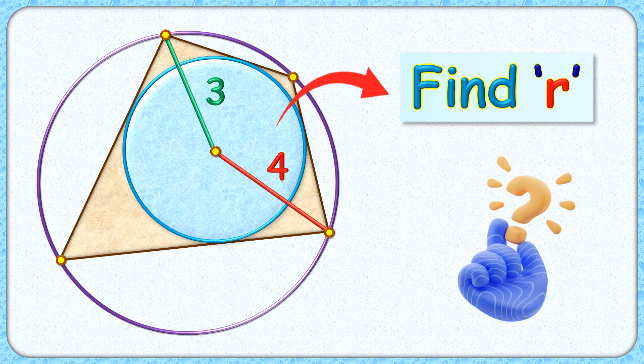Wow, this question looks fun to solve. Given to us are two circles and a quadrilateral. The distance of opposite vertices of this quadrilateral from the center of the blue circle is given as 3 and 4 centimeters. The exciting part is with this limited data we have to find the radius of this blue circle.